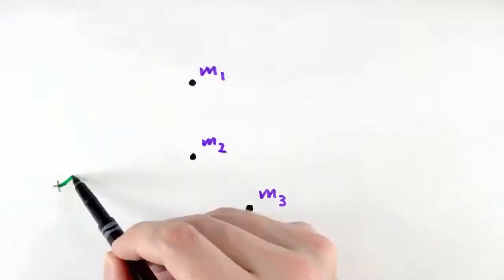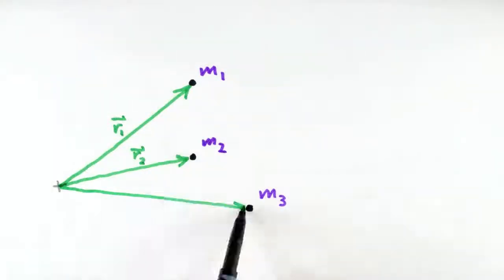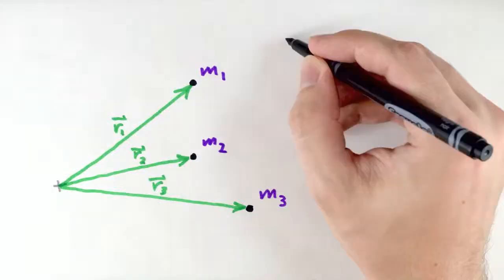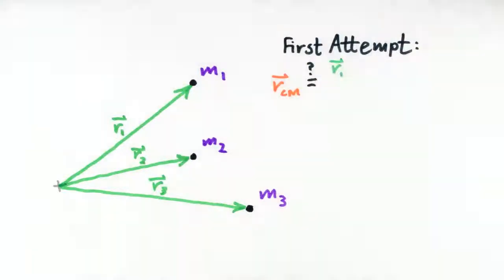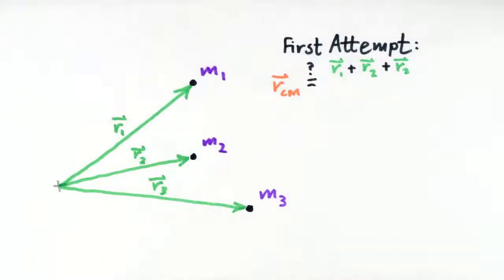Let's first consider a case where our system can be well described by three distinct point masses and corresponding locations described by position vectors. We're interested in finding the average location, so as a first attempt, we might try to calculate this average in a way that we would probably first try for most anything that we're trying to average. Namely, just add up all the elements, here all the position vectors, and divide by the total number of such positions.